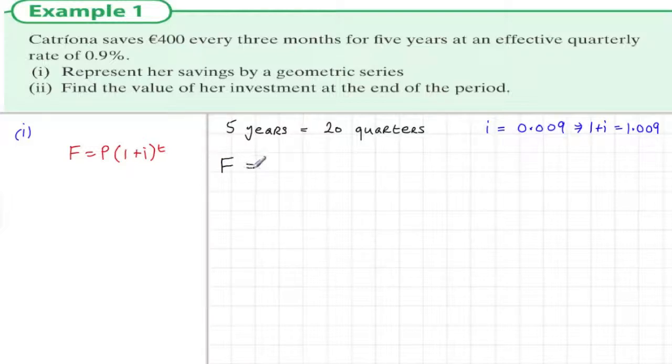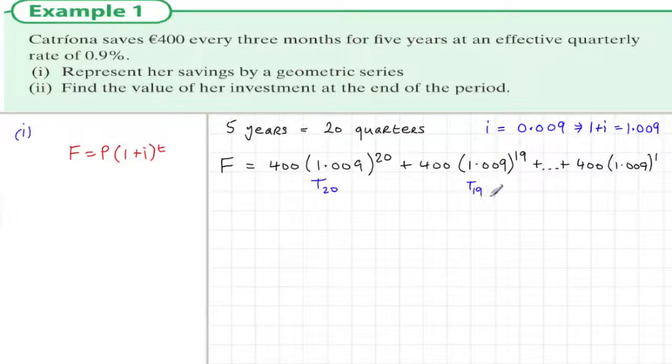Now the future values: the first 400 euros invested 20 quarters ago would have had 20 lots of 1.009. The next one would have 19 terms of interest, and this is a series going down to the last 400 invested which would have just one term of interest. So this is a geometric series, a series with plus signs between them, going from term 20 to term 1.